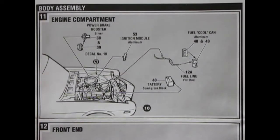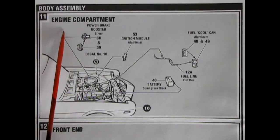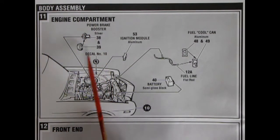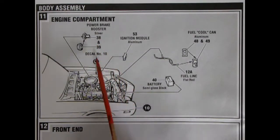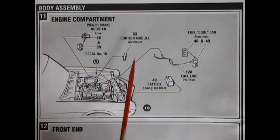Now, once your model is together at that stage, step ten, it's time for the body assembly in step eleven. Here, we have our engine compartment getting put together. So, left and right hand side on our power brake booster. And there's some decals that are going to go in here, under the hood. Baldwin Motion ones, and everything else.